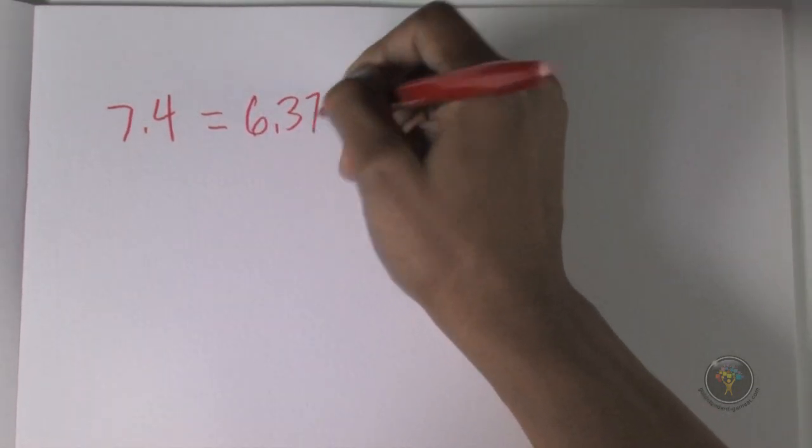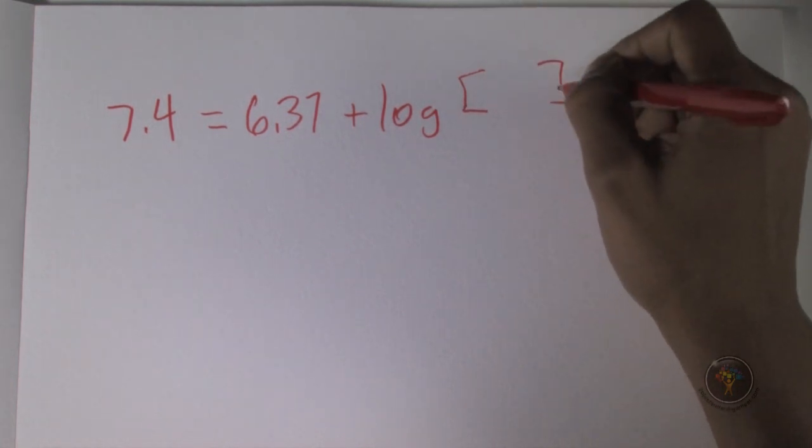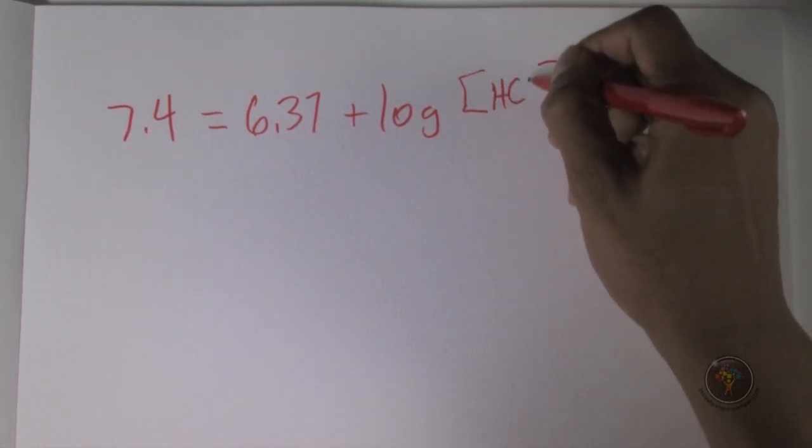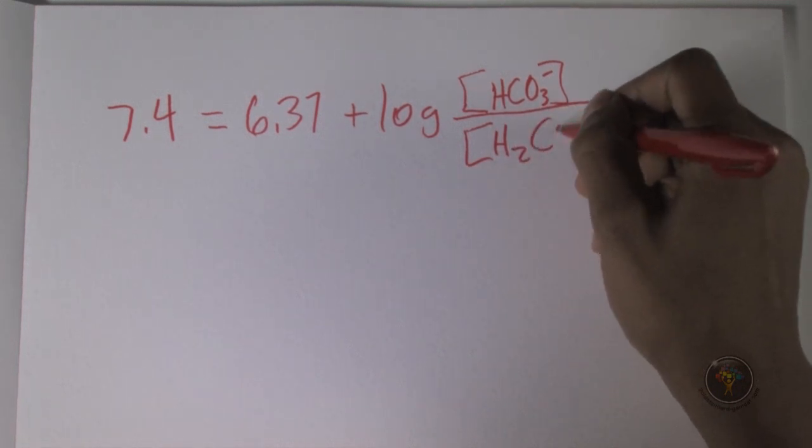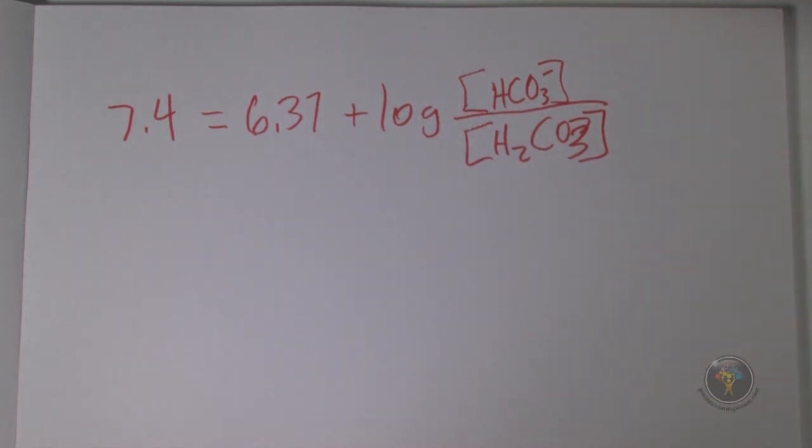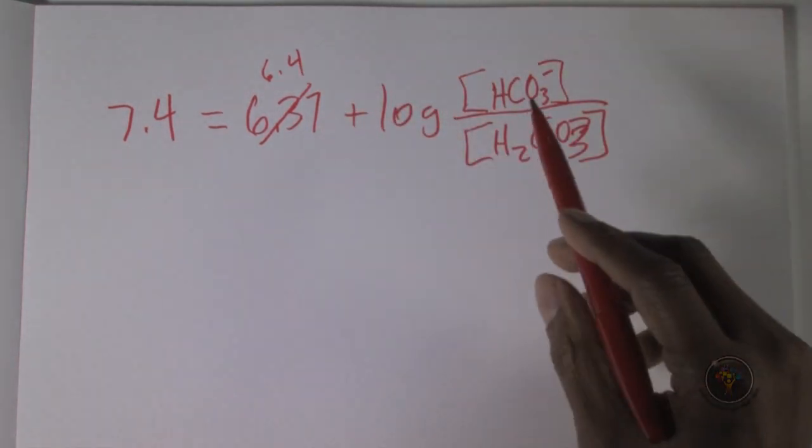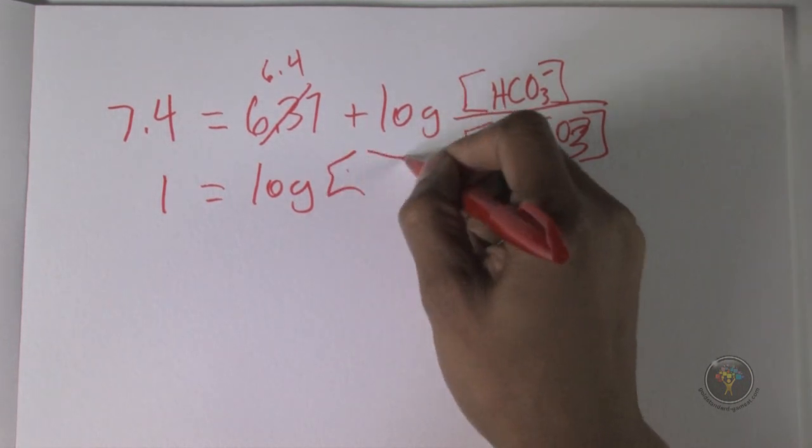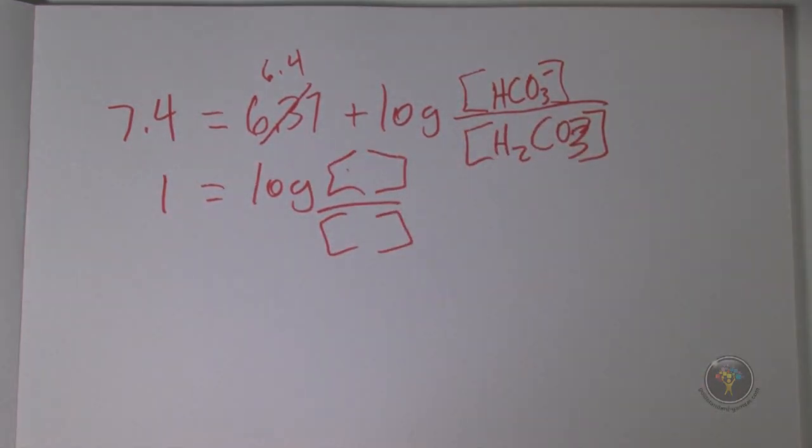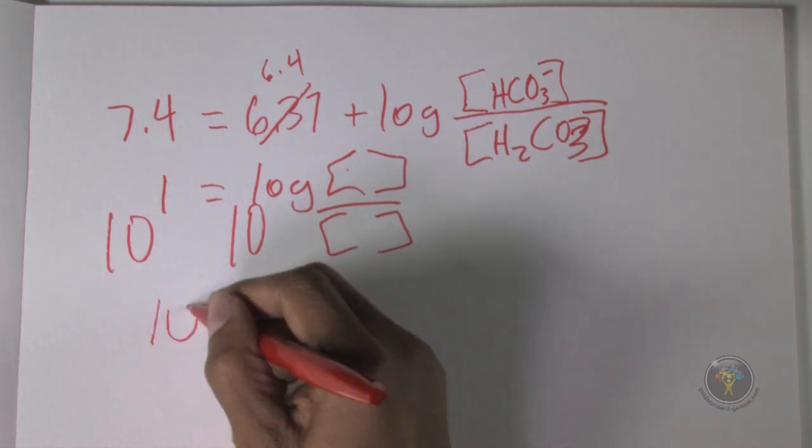We're going to take the pKa of the bicarbonate system, and the pKa of the bicarbonate system is 6.37, so we have 6.37 pKa plus, we'll have the log of the anion form, the base form, up here, which is HCO3 minus, over the acid form, which is the protonated form, which is H2CO3. This is the same as 6.4, and we're going to subtract that from both sides, so we get 1 on this side, and that's equal to log of all these other things. To get rid of the log, we raise both sides to the power of 10, so we raise both sides to the power of 10, just like that.